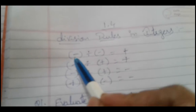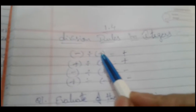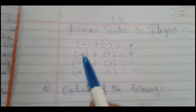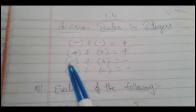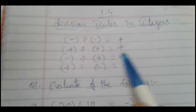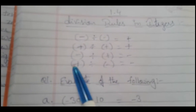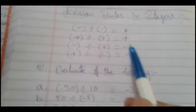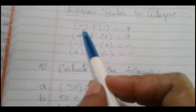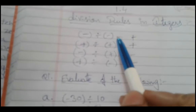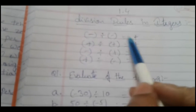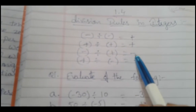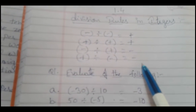When we divide a negative integer by a negative integer, we get a positive sign. Positive divided by positive also gives positive. Negative divided by positive gives negative, and positive divided by negative gives negative. So when we divide two integers with the same sign, we get positive; in other cases we get negative.